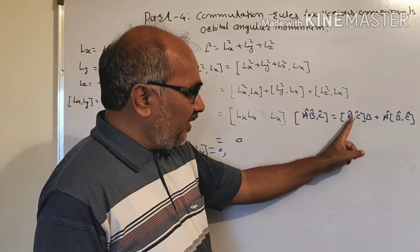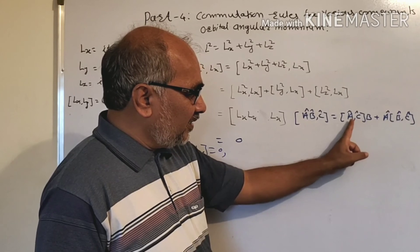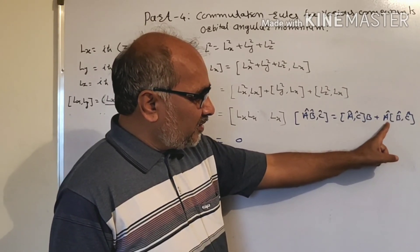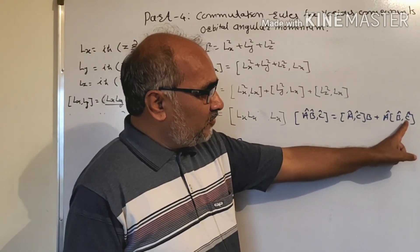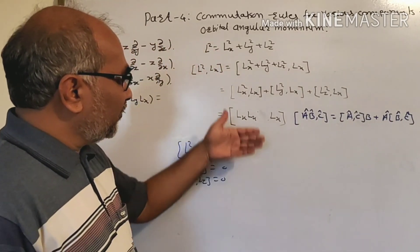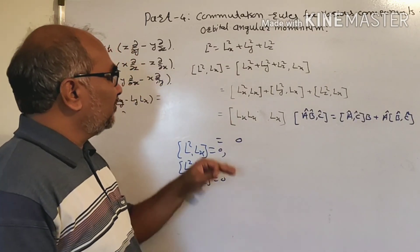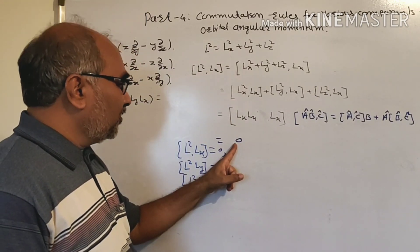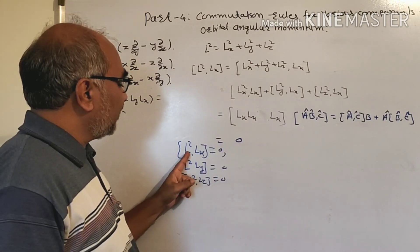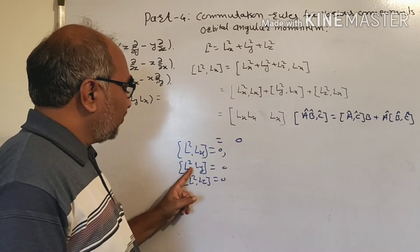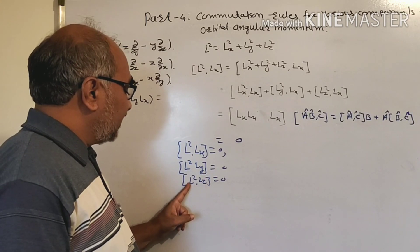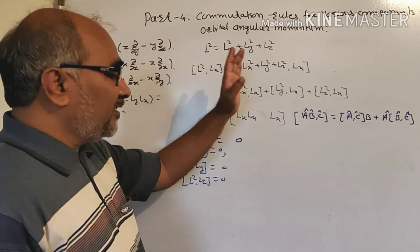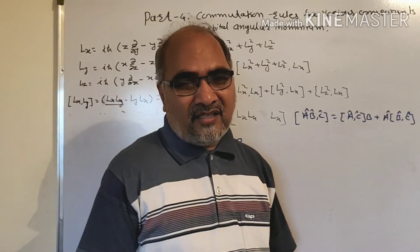Using the identity [AB, C] = A[B,C] + [A,C]B, and working through this, we can show that [L², Lx] = 0. Similarly, [L², Ly] = 0 and [L², Lz] = 0. This means L² and its components all commute with each other.